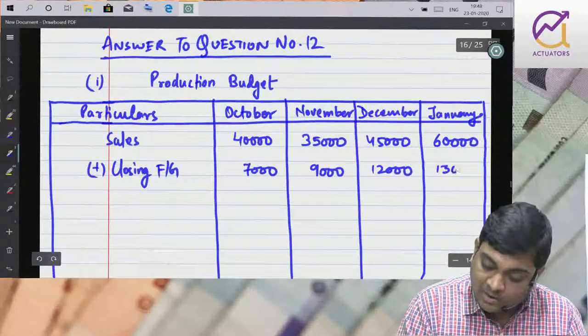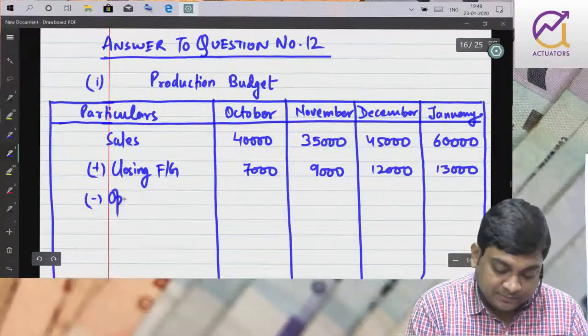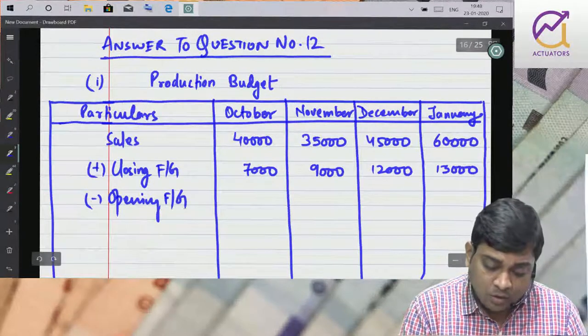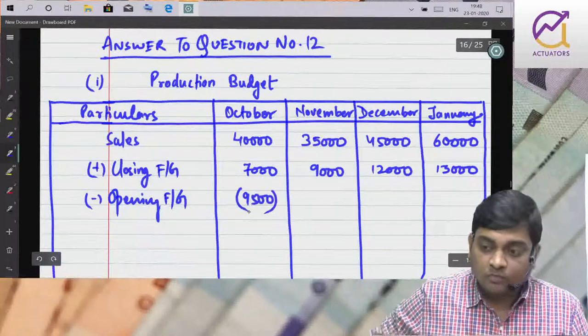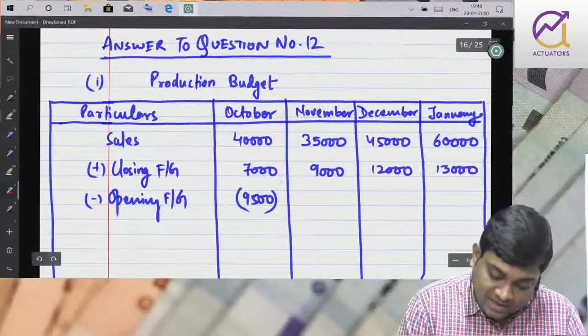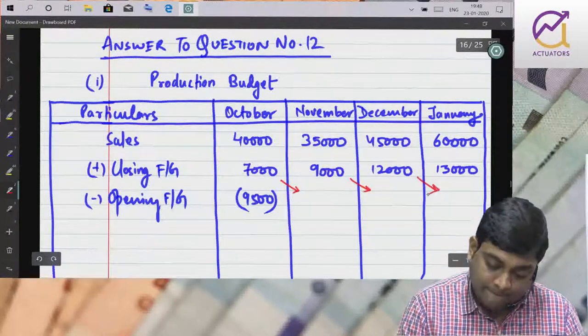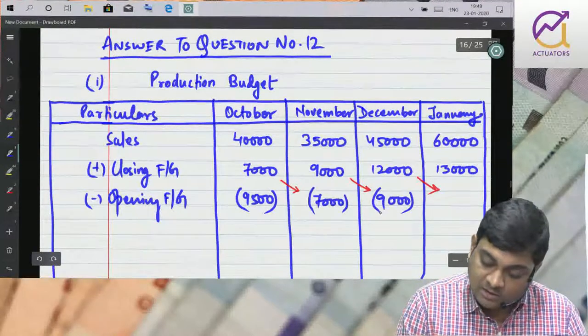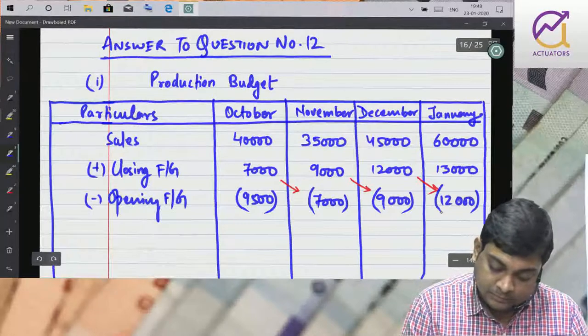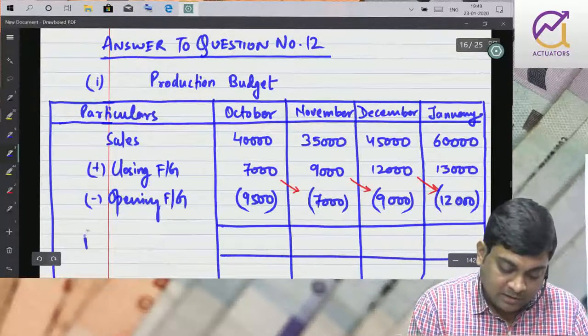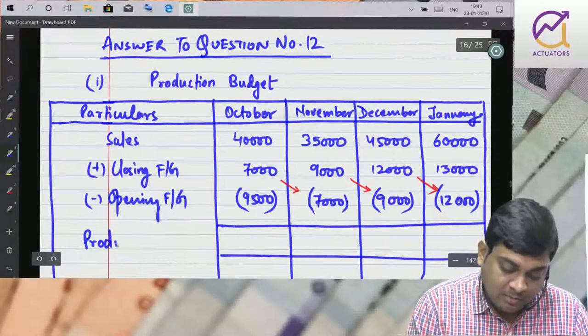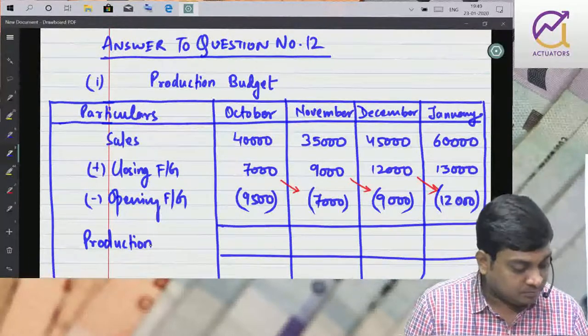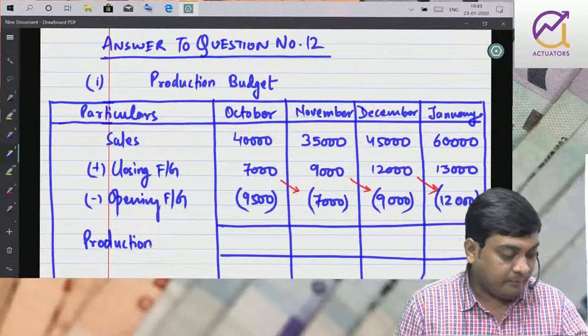Less opening finished goods. October ka diya hai 9,500. November ka opening will be like this, aise utrayega niche. So October 7,000, November 9,000, December. So agla hamara production: October 37,500, November 33,000, December 44,000.